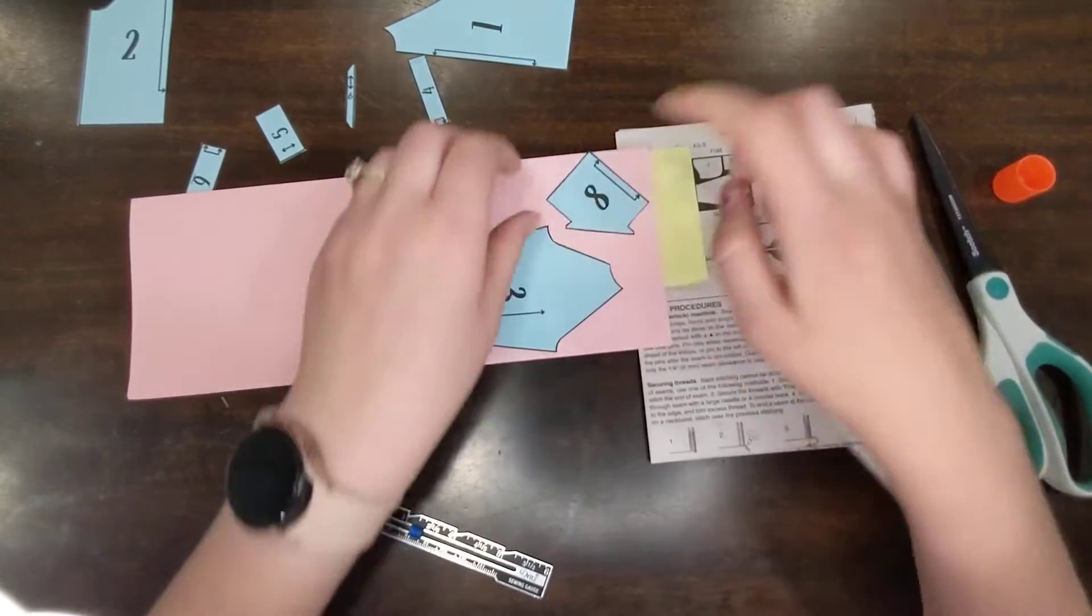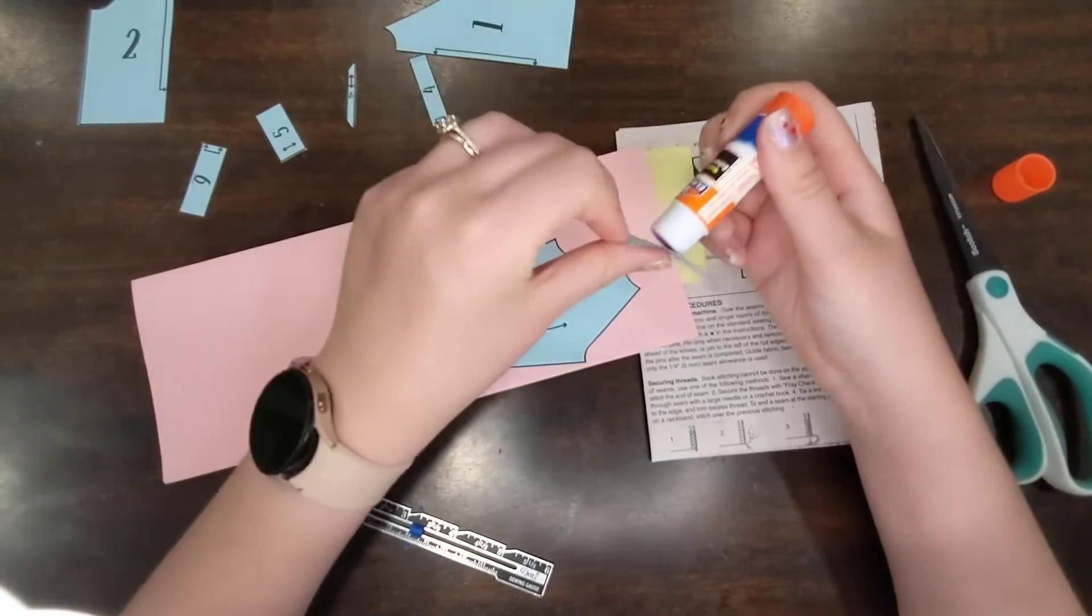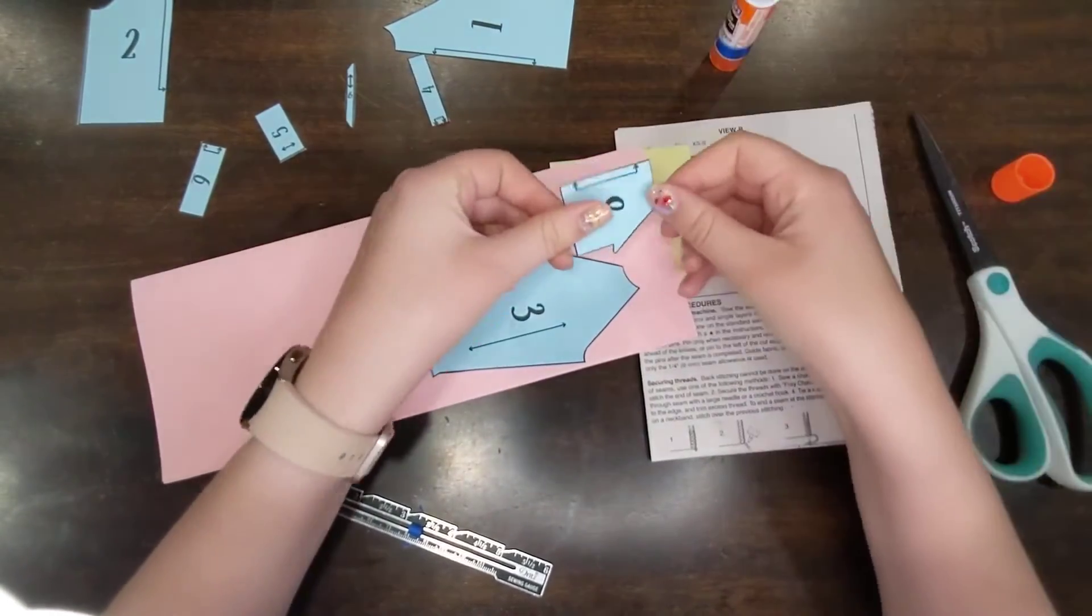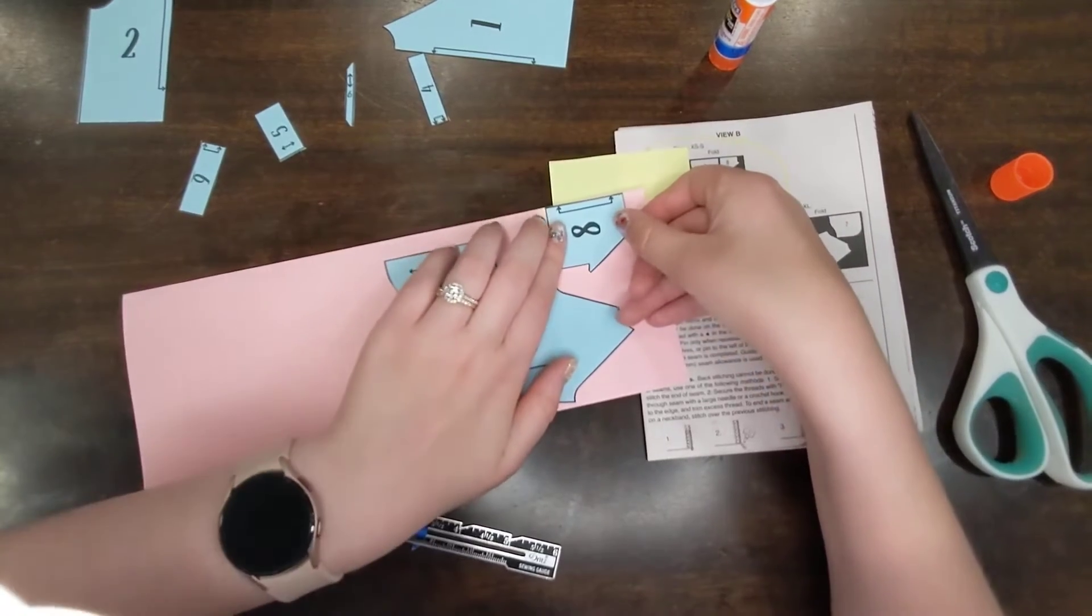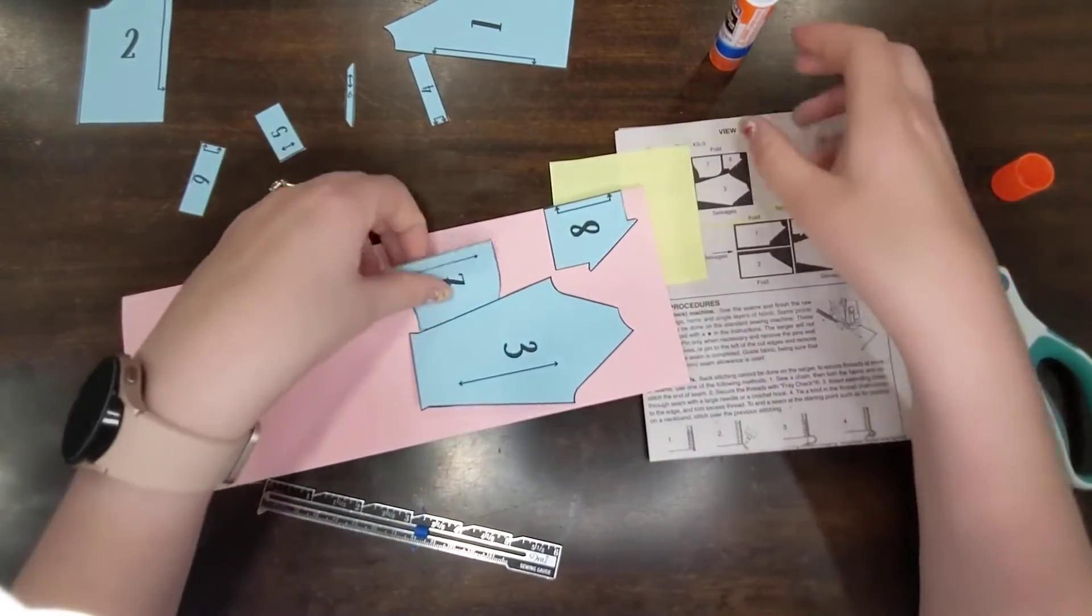Eight, I don't need to necessarily measure because my arrow is already going to be parallel because it's going to be right on the fold. So I'm going to line that right up on the fold, glue that down.